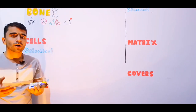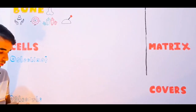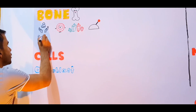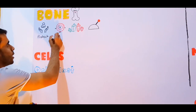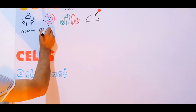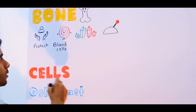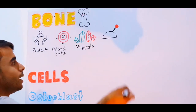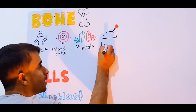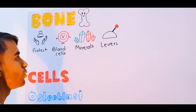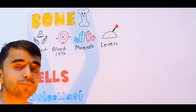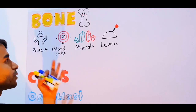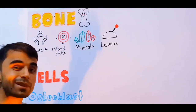Bones in our body do a lot. They protect you, they support you, they make blood cells, they store minerals in your body, and they also serve as levers for muscles in order to change muscle movements into body actions. So bones do a lot: they protect you, support you, make blood cells, store minerals, and they are levers in your body.